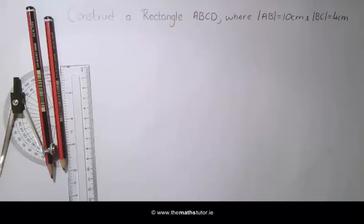We are going to construct a rectangle given the side lengths. In this example, we are going to construct a rectangle ABCD where AB is equal to 10cm and BC is equal to 4cm.